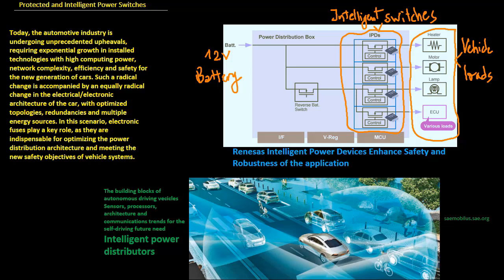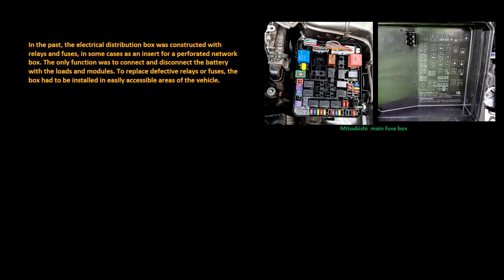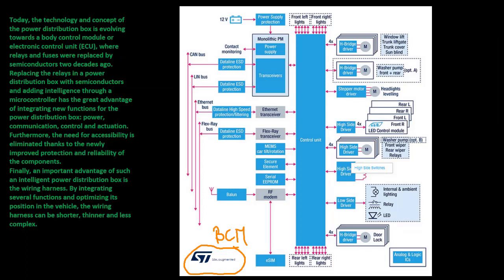In the past, the electrical distribution box was constructed with relays and fuses. The only function was to connect and disconnect the battery with the loads and modules. To replace defective relays or fuses, the box had to be installed in easily accessible areas of the vehicle.